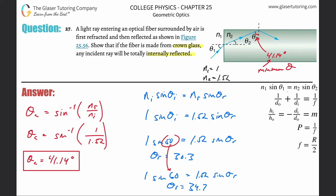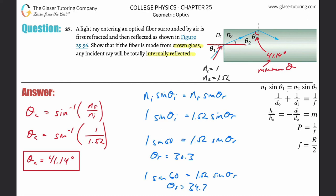So as θ1 increases and moves further from the normal, θ2 also increases. But θ2 and θ3 form part of a right triangle, so as θ2 increases, θ3 must decrease. This means increasing θ1 produces a smaller θ3, and we need to find the minimum value θ3 can reach.